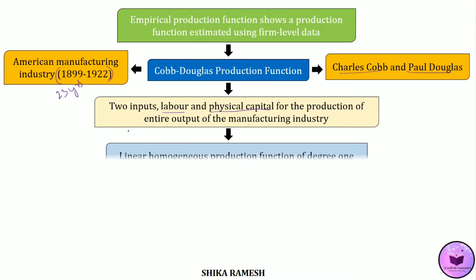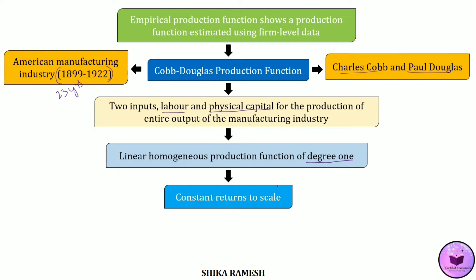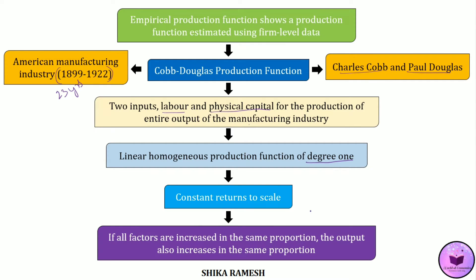The Cobb-Douglas production function is a linear homogeneous production function of degree 1, which implies constant returns to scale. It means if all the factors are increased in the same proportion in the long run, then the total output will also increase in the same proportion.